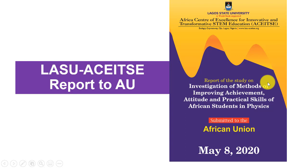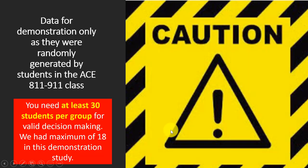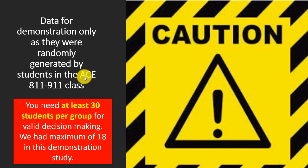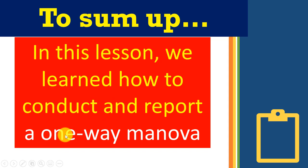We are ready to send a report to the African Union: 'Report of the study on investigation of methods of improving achievement, attitude, and practical skills of African students in physics — submitted to the African Union, May 8, 2020.' A word of caution: the data were for demonstration only, randomly generated by students. In real practice, you must collect actual field data, and you need at least 30 students per group for valid decision-making — we had a maximum of only 18.